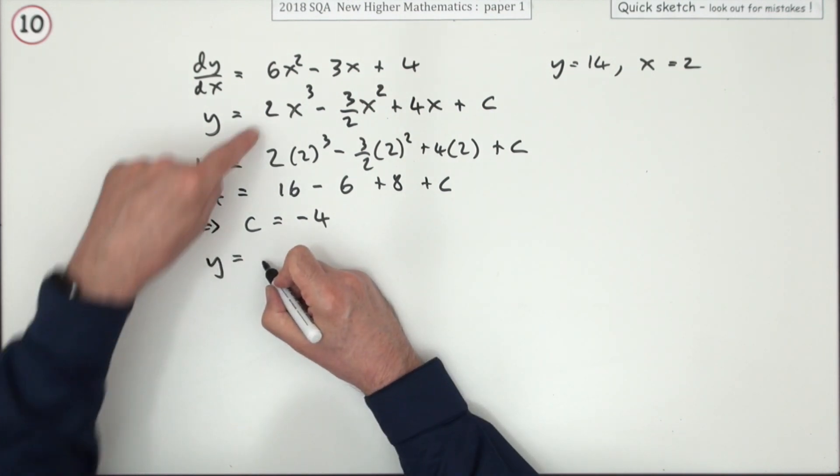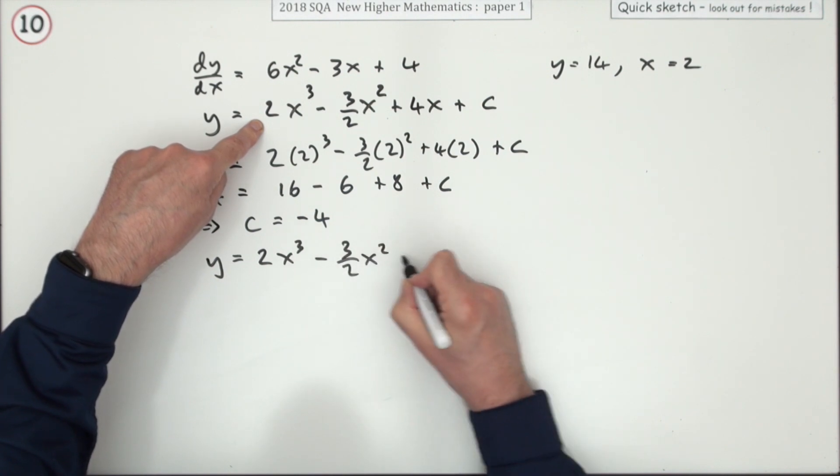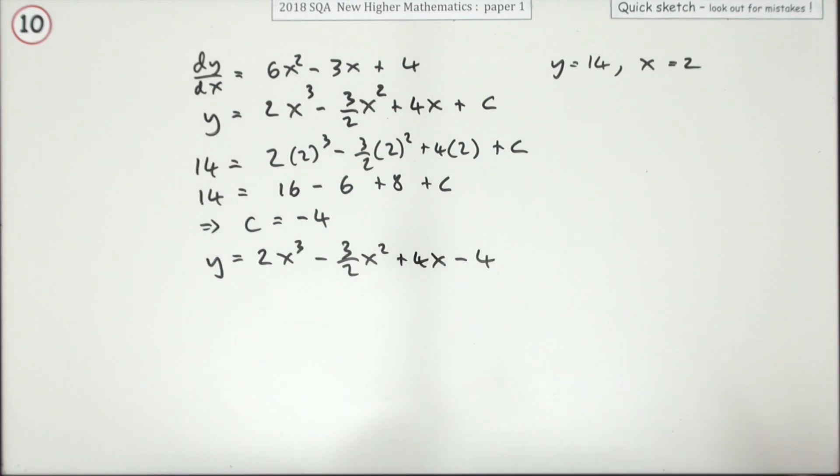And then the final mark will be for popping it all back together. y = 2x³ - 3/2 x² + 4x - 4.